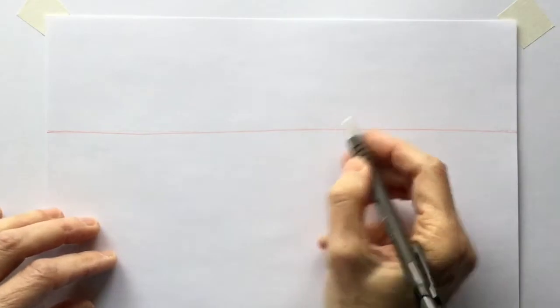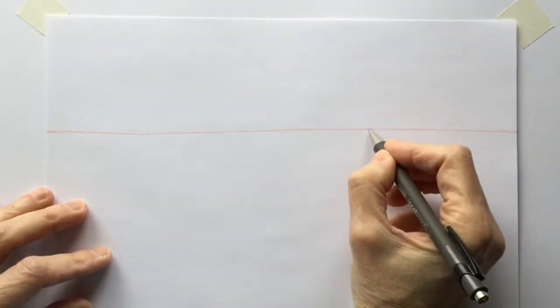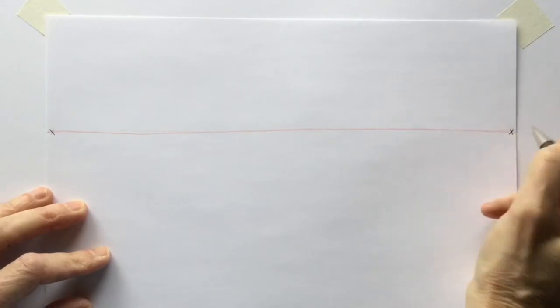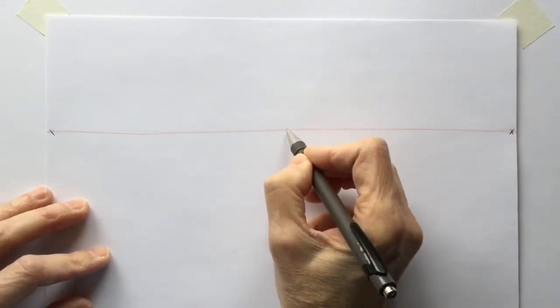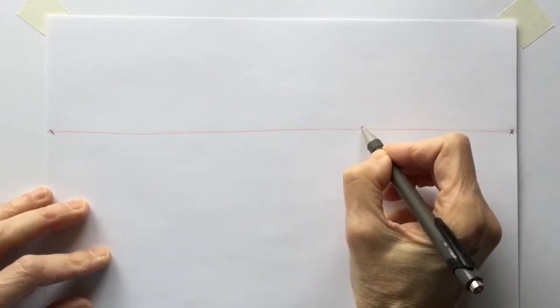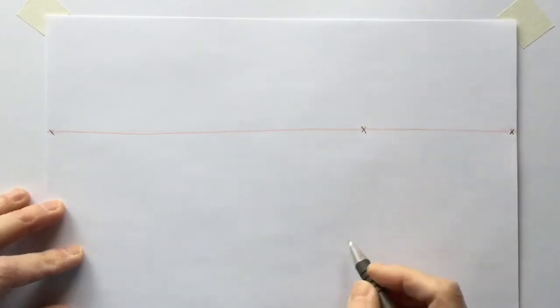And I'll give myself a vanishing point, two vanishing points for a two-point box, and one vanishing point maybe over here for my one-point box.